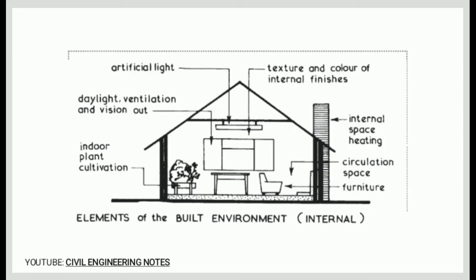From the illustration, we can see some of the examples of the internal elements of the built environment. We have indoor plant cultivation, daylight ventilation and vision out, artificial light, texture and color of internal finishes, internal space heating, circulation space, and furniture.